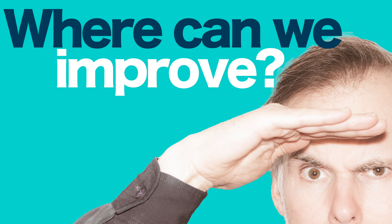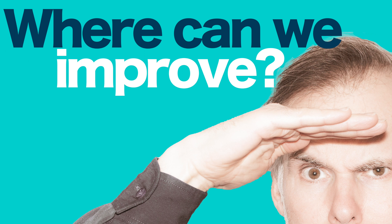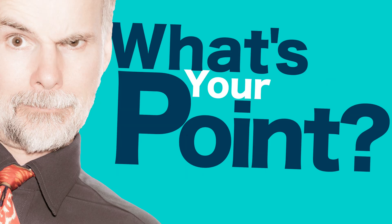Next comes the description of the sales activity of the person who failed to meet his target. Last month, a considerable amount of time — 70% — was spent communicating with prospective customers. In-person meetings at 15% and telephone calls at 20% were the preferred means of communication. Engagement largely centered around delivering sales pitches at 20% and explaining sales proposals also at 20%.